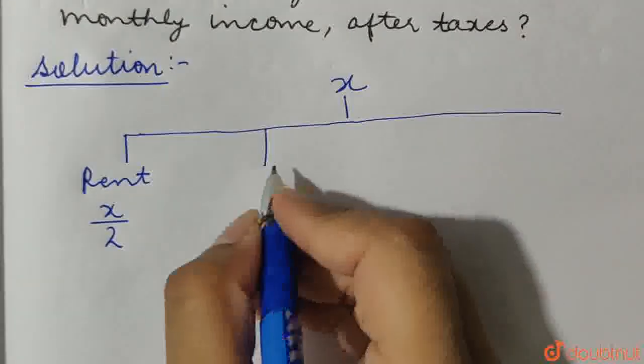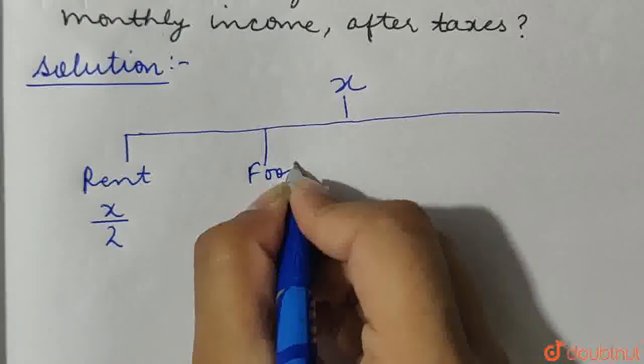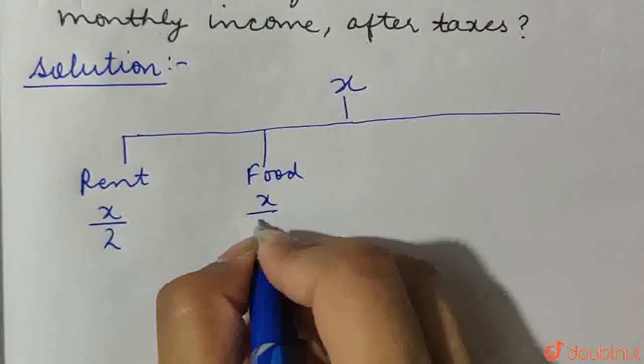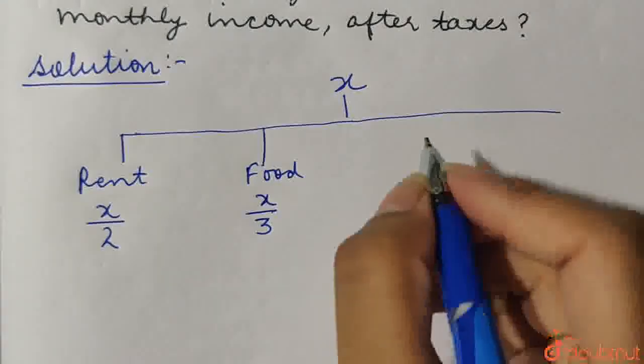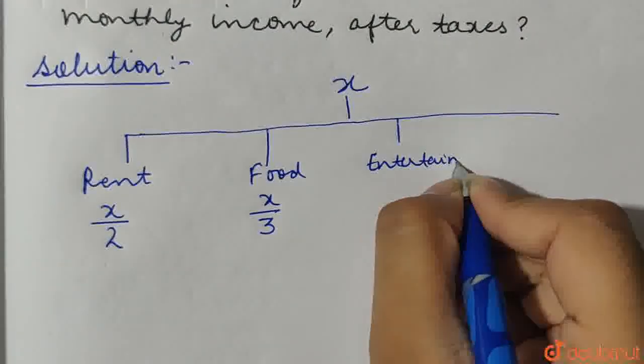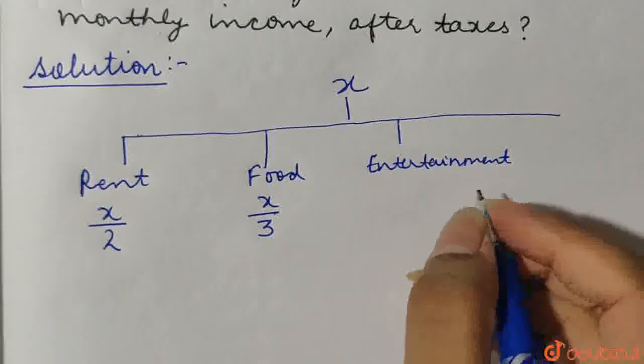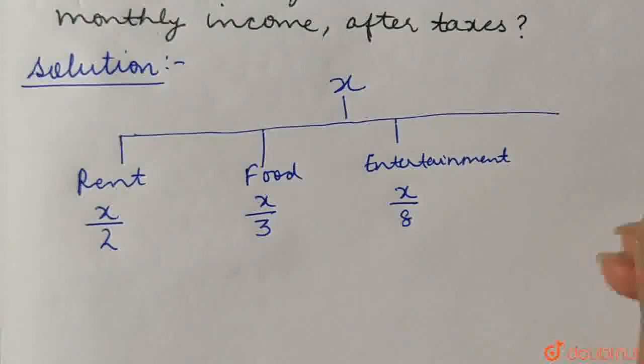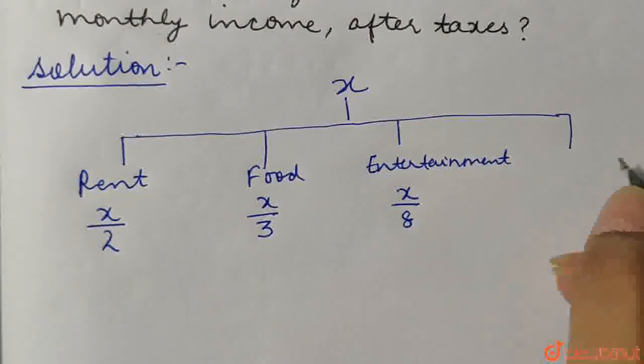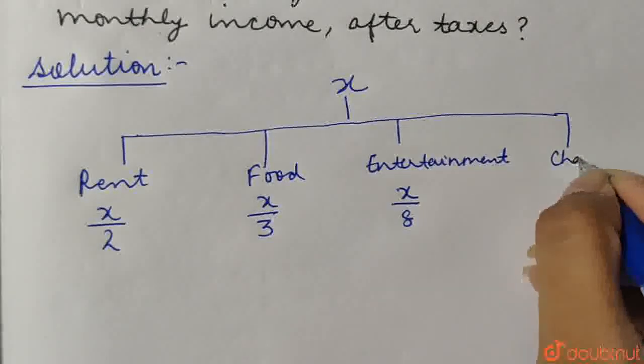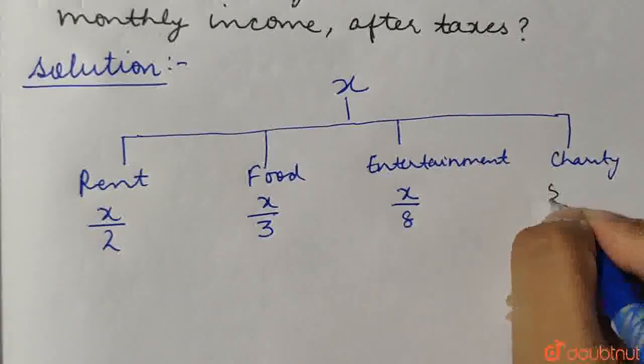Secondly, he spends some on food. It has been given that he spends 1 by 3 on food, that is X by 3 on food. He spends some on entertainment, which is given as 1 by 8, that means X by 8 on entertainment. And lastly, the remaining amount he donates to the charity, which has been given as $500.